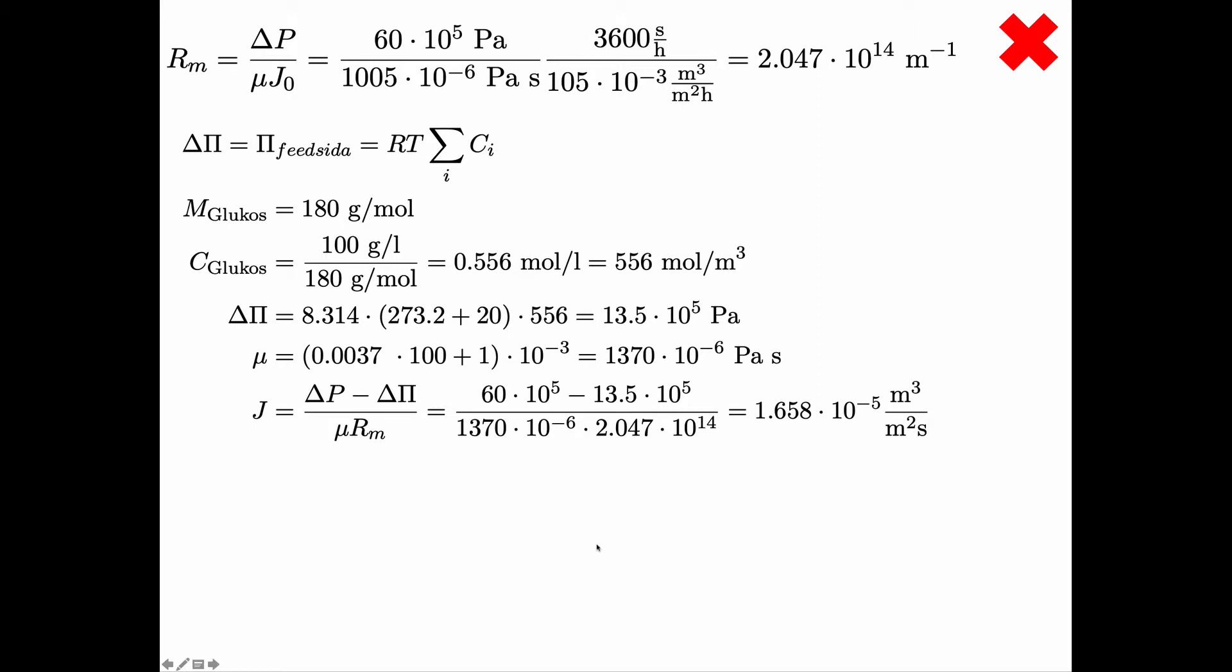Let's see here. We calculate the permeate flux delta P minus delta π. You have 60·10⁵ and 13.5·10⁵. You see that these two are in the same order of magnitude and delta π is less than delta P so that seems reasonable. Delta π can't be larger than delta P because then the flow would go in the wrong direction. We calculated Rm before.